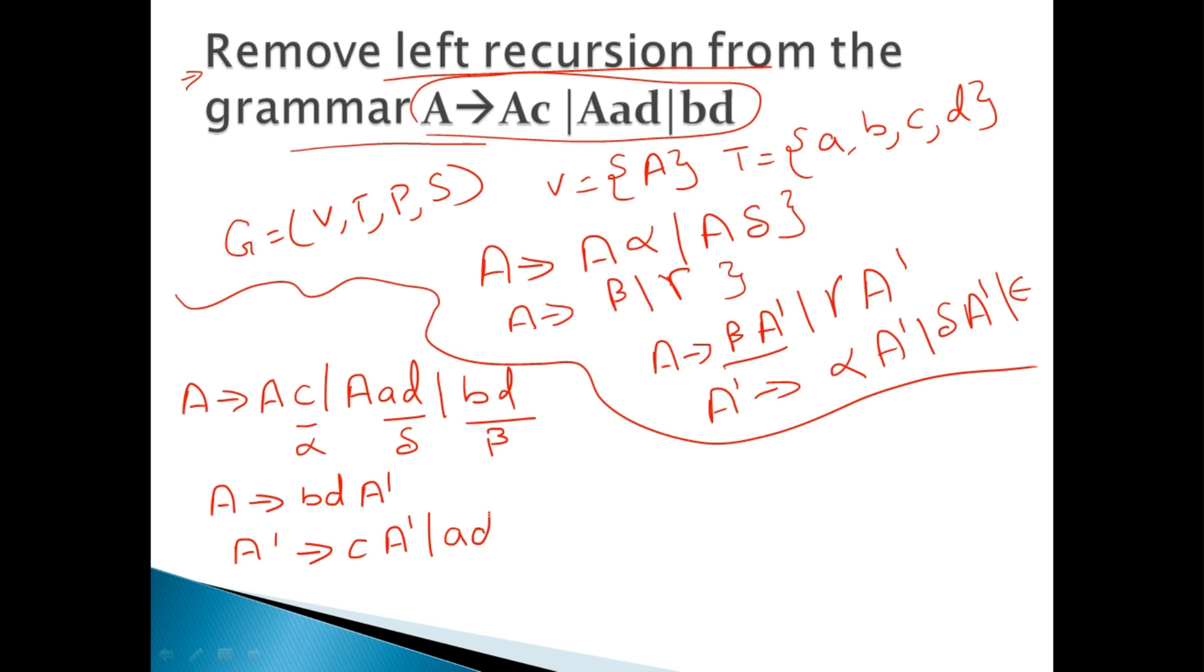And then delta A dash, that is A D A dash, and then epsilon. So you have removed the left recursion from the given grammar.